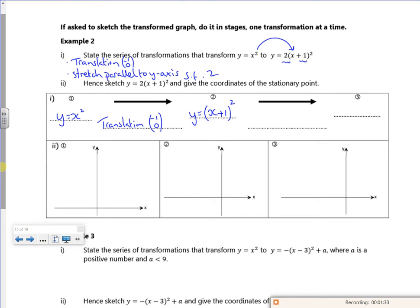So my original graph has a vertex at 0, 0. It moves 1 left so it now has a vertex at minus 1, 0.